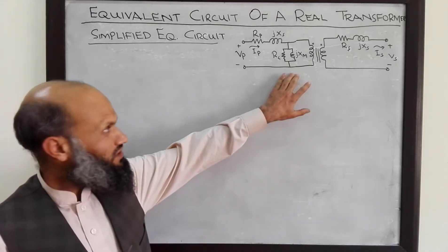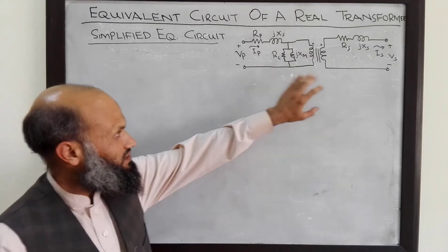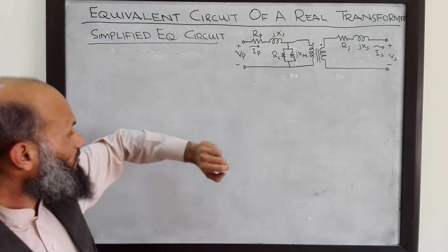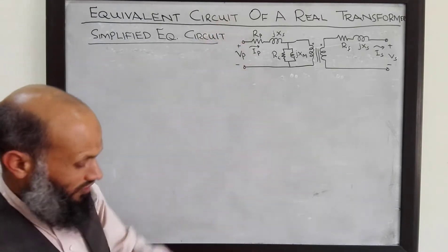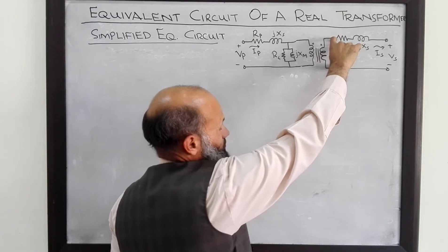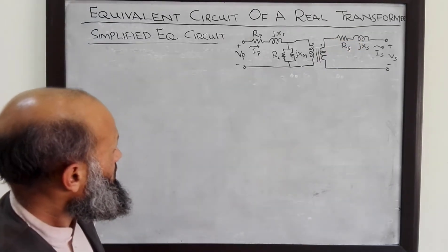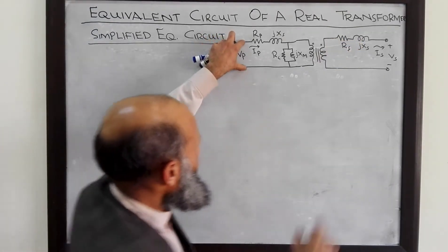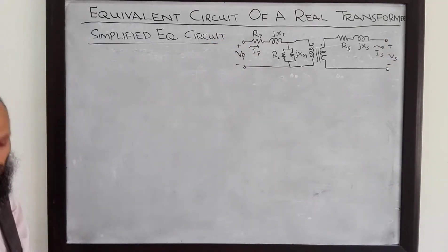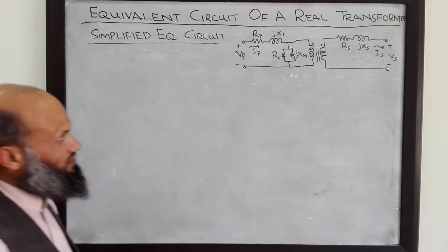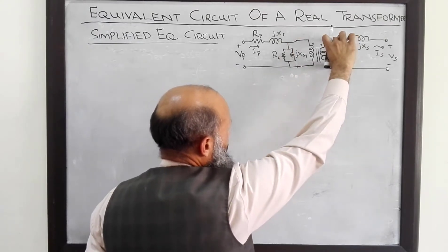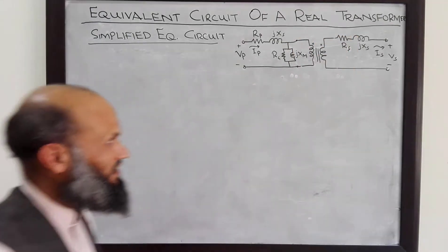I have sketched again the equivalent electrical circuit of a real transformer. One important point is that for an ideal transformer, this voltage is related to this voltage by the turns ratio. However, these terminal voltages are not related to each other by the turns ratio — this point is important to remember. The voltage here is related to the voltage at this internal point by the turns ratio.